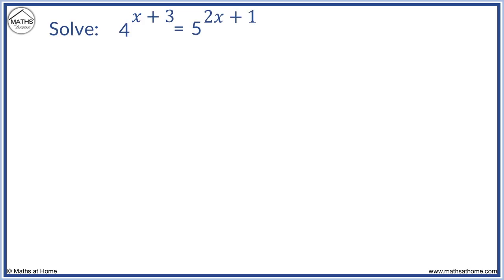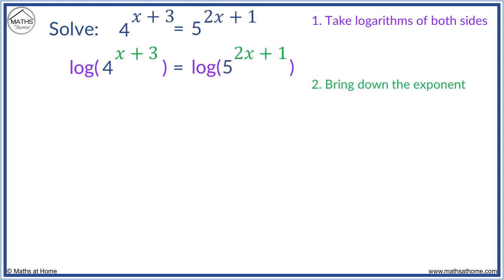Solve 4 to the x plus 3 equals 5 to the 2x plus 1. We firstly take logs. We bring down the exponents.